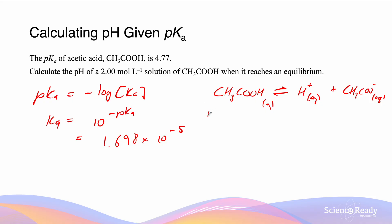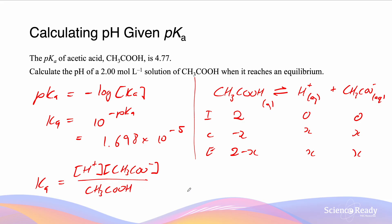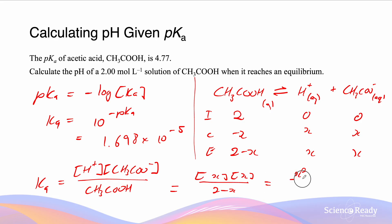Setting up the ICE table: initial [CH₃COOH] = 2 mol/L, [H⁺] = 0, [CH₃COO⁻] = 0. Change: −x for the reactant and +x for both products. At equilibrium: [CH₃COOH] = 2 − x, [H⁺] = x, [CH₃COO⁻] = x. The Ka expression is [H⁺][CH₃COO⁻] / [CH₃COOH] = x² / (2 − x).